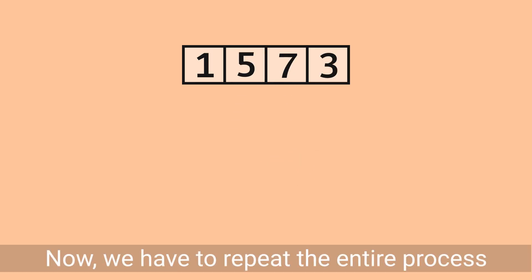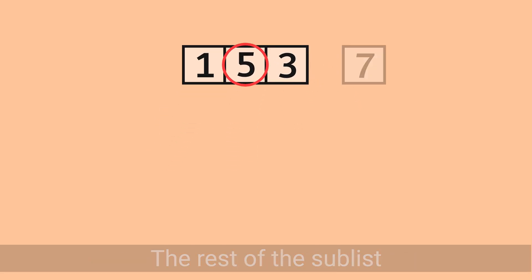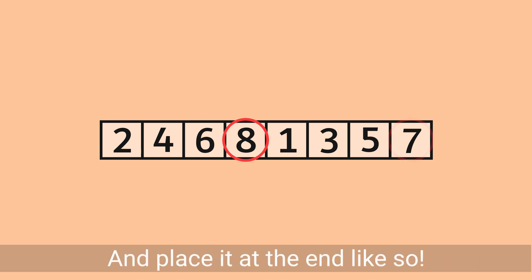Now, we have to repeat the entire process on the other sublist from the start. Remove the last number and sort the rest of the sublist. And finally,